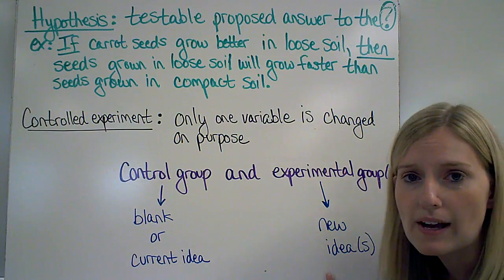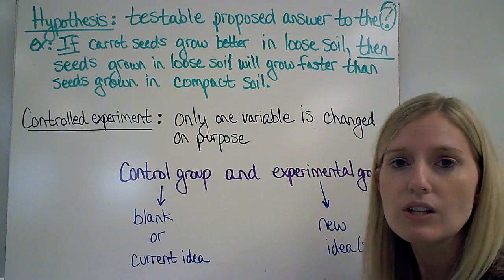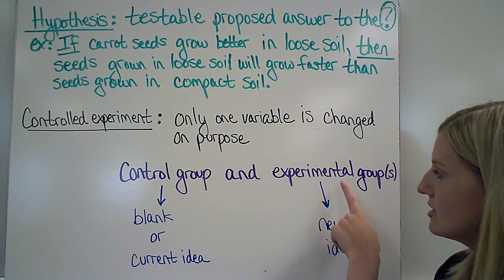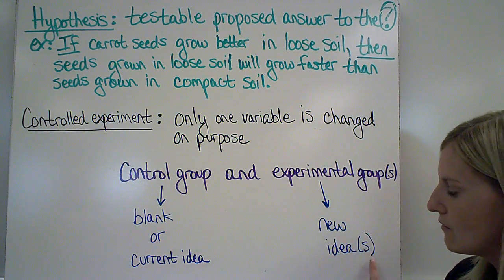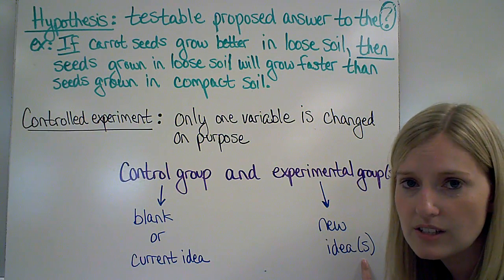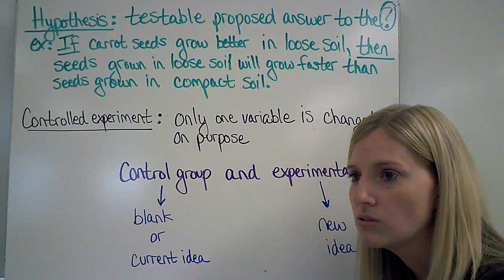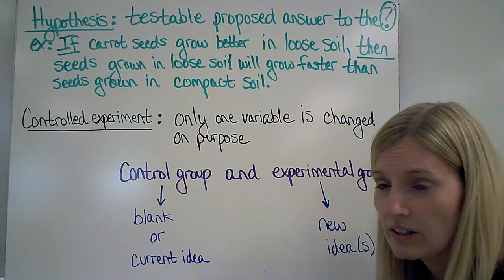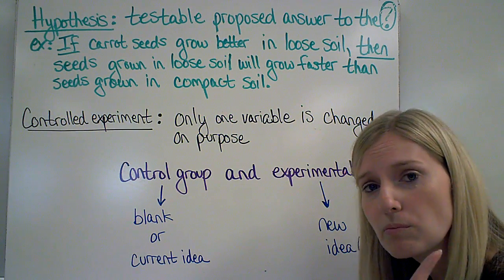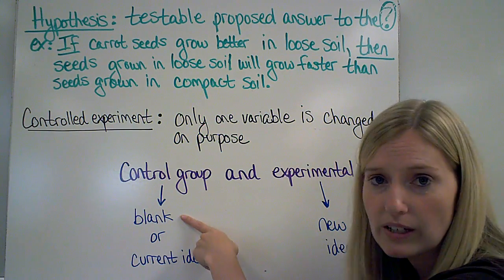The experimental group is your new idea. In this case, my new idea is using loose soil instead of compact soil. I could test other things too — that's why there's an 'S' in parentheses. I could have lots of experimental groups. Like I said before, sugar water or salt water would both be experimental groups compared to just regular water.